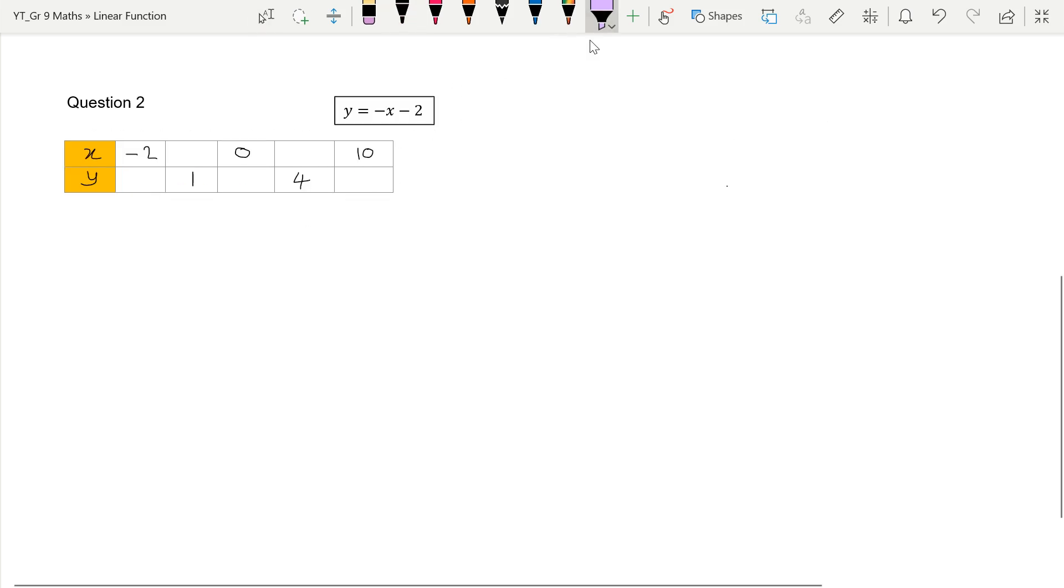Second example. I'm not going to draw a spider diagram for this one. I'm just going to go straight to using my equation and completing my table. I've got my input value there of x, and then I've got my output value there of y. But do you see how this one is slightly different? With the previous one, we were given all the input values, and we just had to find the output values. Now with this one, we actually have input values and output values.